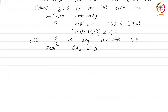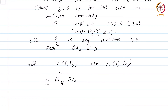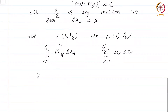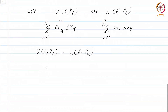Now let us compute U(f, P_epsilon) and L(f, P_epsilon). U(f, P_epsilon) is the summation of M_k · Δx_k for k from 1 to n, and L(f, P_epsilon) is the summation of m_k · Δx_k for k from 1 to n. What we are really interested in from the previous criterion is U(f, P_epsilon) minus L(f, P_epsilon), and a moment's calculation shows this equals the summation from k=1 to n of (M_k - m_k) · Δx_k. What do we know about M_k minus m_k?